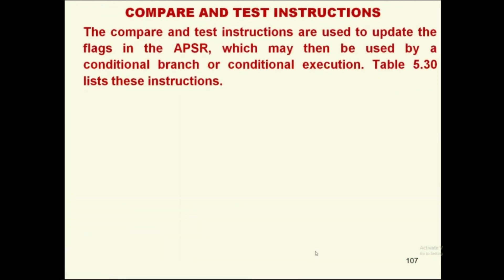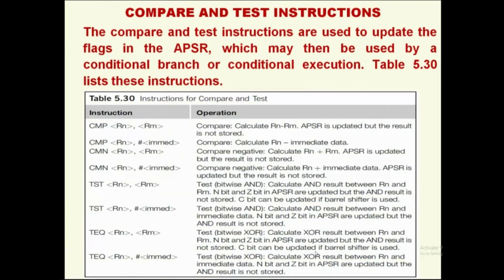There are also compare and test instructions, which are used to update the flags in the APSR register. These flags may then be used by conditional branch or conditional execution instructions. There are compare (CMP), compare with immediate, compare negative (CMN), test (TST) using bitwise AND, test with immediate, test XOR (TEQ), and test XOR with immediate — all used to set and clear corresponding bits for conditional logic.